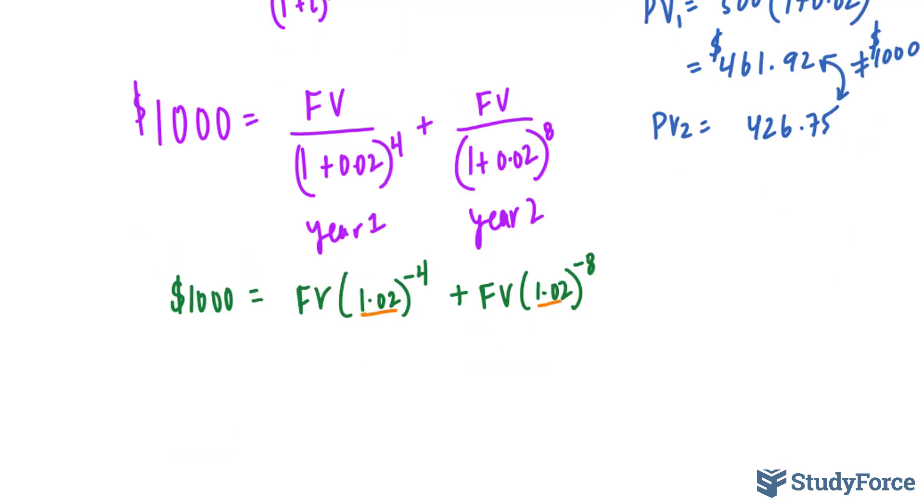Using what we know about common factoring, I'll factor out an FV from both of those terms. We end up with FV(1.02^-4 + 1.02^-8) and 1,000 on the left side. Adding these up and dividing both sides by that sum gives us the future value.